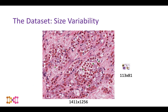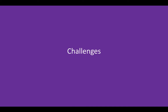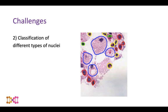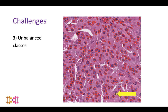The dataset also has significant variance in image size, with very large images on the left and very small images on the right. The challenges we faced included: first, separating touching nuclei — we needed to know exactly where individual nuclei were; second, effectively differentiating between the four cell categories; and third, handling the significant class imbalance to ensure good performance across all classes.